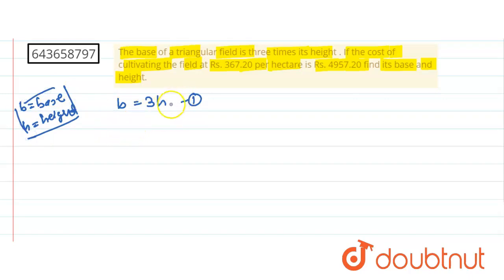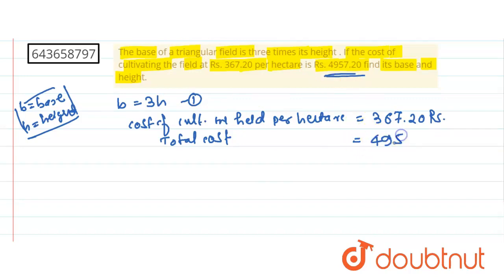Now see what is given. Cost of cultivating the field per hectare is 367.20 rupees, and the total cost, total cost is also given of cultivating the total triangular field is equal to 4957.20 rupees.